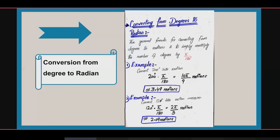If we put π as 3.14, the answer will be 3.49 radians. The second example: convert 120 degrees into radians. 120 multiplied by π/180 gives 2π/3 radians, and if we put π as 3.14, the answer will be approximately 2.09 radians.